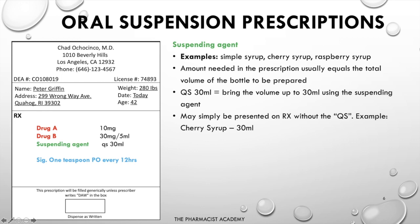Next, we have the suspending agent. In the real exam or prescription, they will not say 'suspending agent' — they will give you the actual name, such as simple syrup, cherry syrup, or raspberry syrup. These are meant to provide a pleasant taste and allow the fine powders to suspend through it. The amount needed usually equals the total volume of the suspension. For example, they may say 'QS up to 30 mL,' which means bring the volume up to 30 mL using the suspending agent, meaning the whole bottle must be 30 mL. Alternatively, they may just list the suspending agent with '30 mL' beside it.